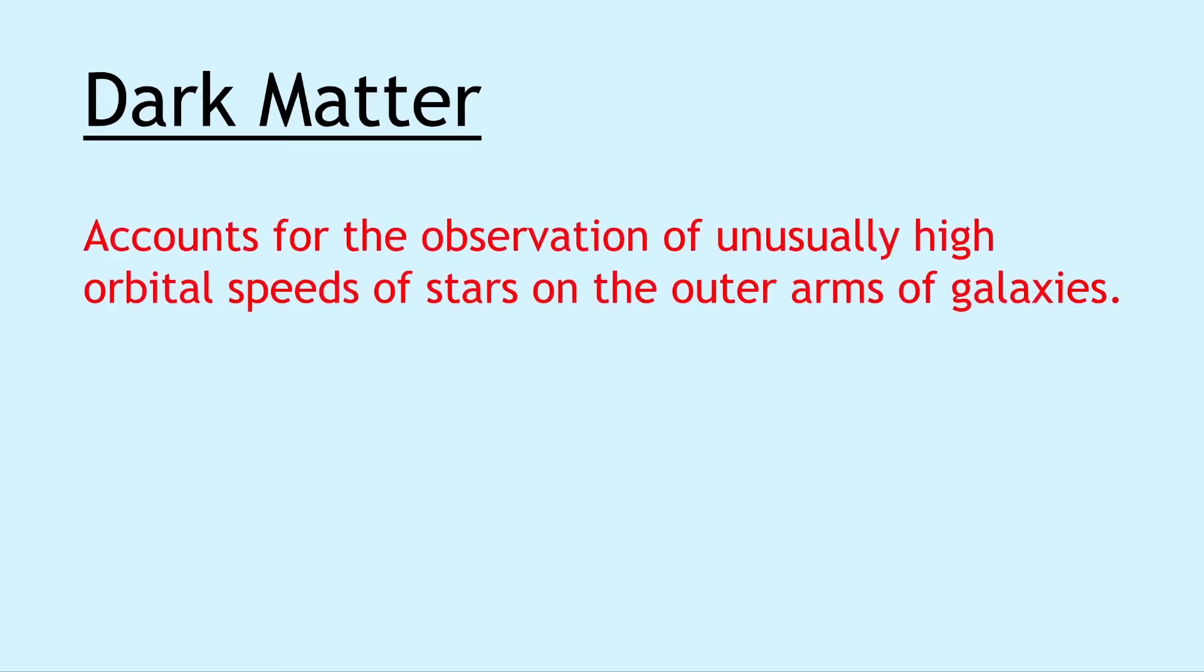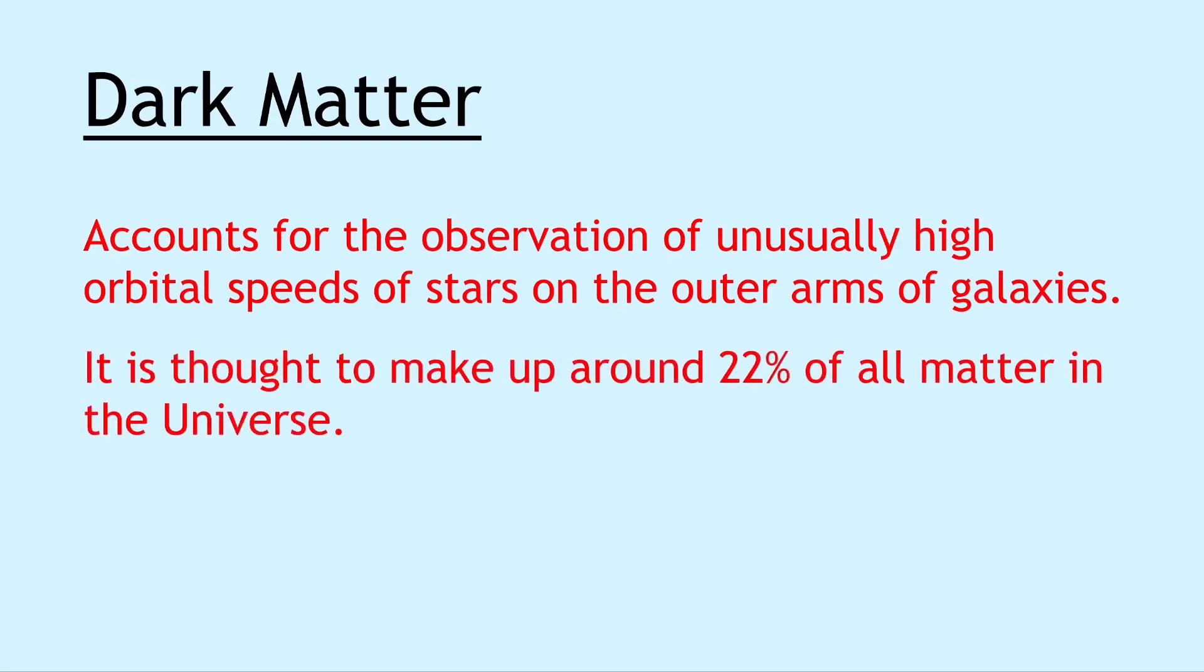Next we have dark matter. And this accounts for the observation of unusually high orbital speeds of stars on the outer arms of galaxies. It is thought to make up around 22% of all matter in the universe.